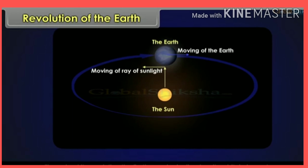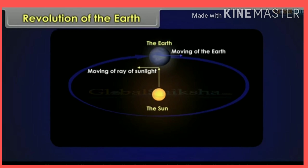Throughout its revolution, the earth remains inclined on its orbital plane at an angle of 66 and a half degrees.